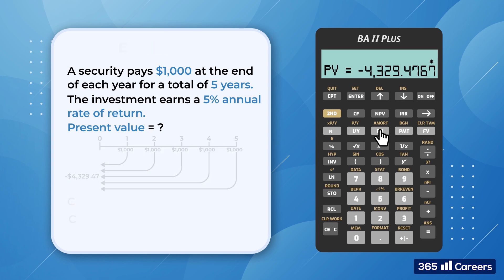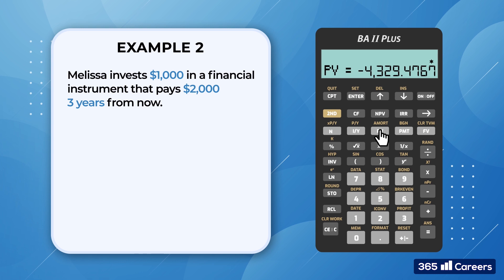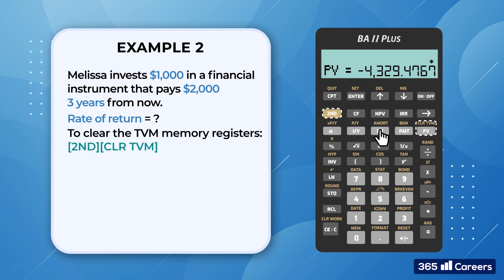Now let's consider another example. Melissa decided that she would like to invest $1,000 in a financial instrument that pays $2,000 three years from now. What's the rate of return for this investment? When we start working on a new task, it's always useful to clear the TVM memory registers of the calculator by pressing 2nd, Clear TVM. The calculator remembers the values you have used previously, even after it has been turned off.